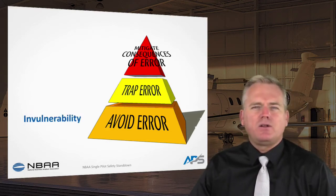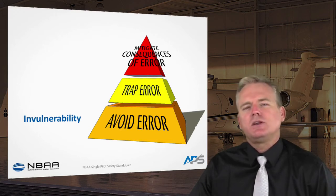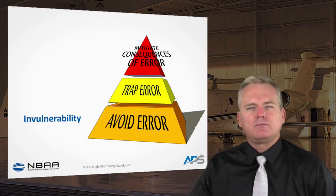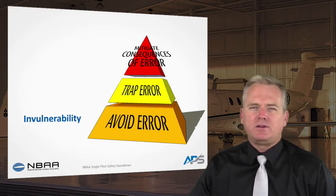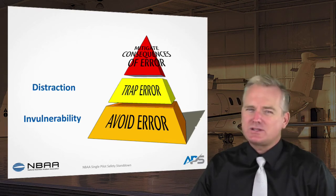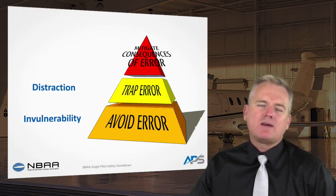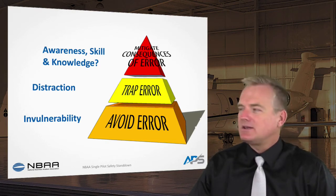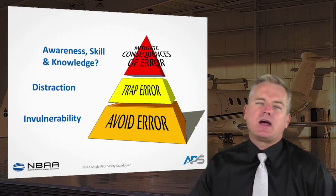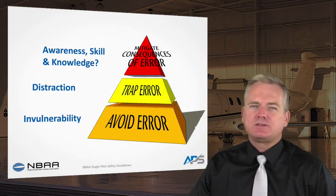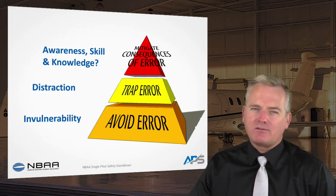In the presentation that follows we'll address these areas through several concepts. First: the perception that pilots are invulnerable — none of us would consciously say we feel invulnerable, but we are all vulnerable, and recognizing that is the first step in being aware of developing situations. Second: trapping the error — distraction can prevent noticing errors in time. Third: mitigating consequences through awareness, skill, and knowledge. Finally: intercepting the situation through manual technique — upset recovery and upset prevention.